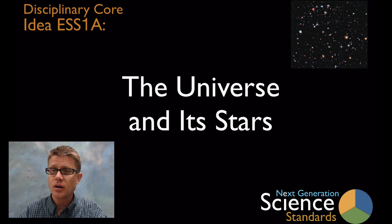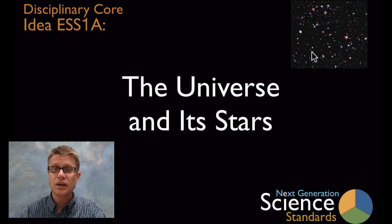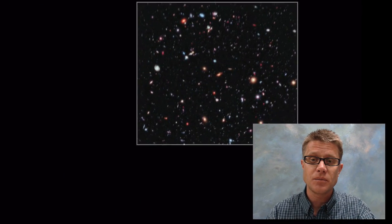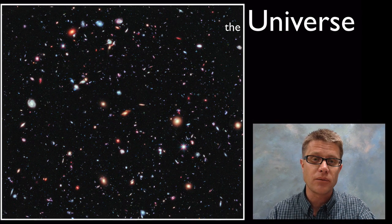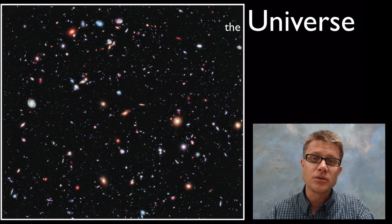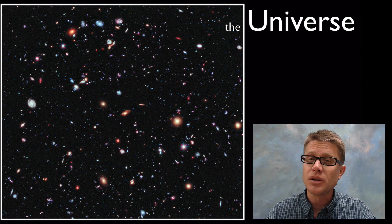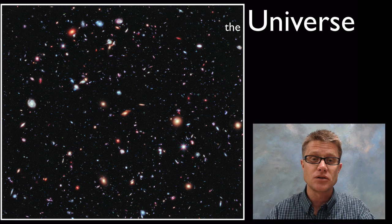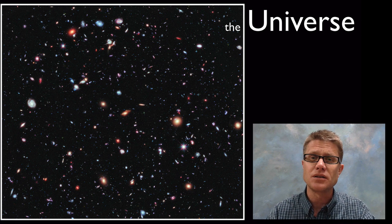NASA pointed its Hubble Space Telescope at the darkest part of the sky and took a long image. What they found is something like this. What you're looking at right here, again the darkest part of the sky, are thousands of galaxies that are literally billions of light years away. And so the universe is immense.